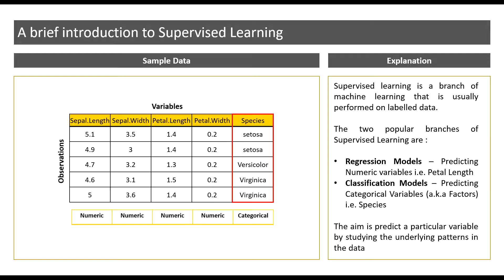Now there are two sub-branches within supervised learning. One being regression models, where we predict a numerical variable using other numerical variables. Remember we did go through this in the introductory video — in case you need a refresher, I have provided a link to that video below. For instance, if I'm predicting petal length, that is a good example of a regression model.